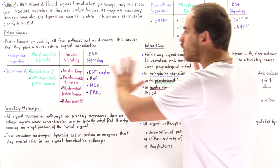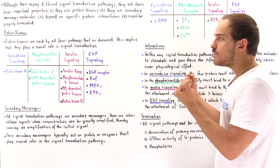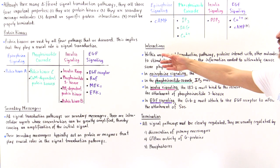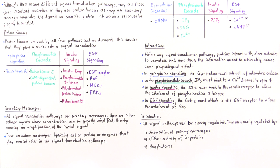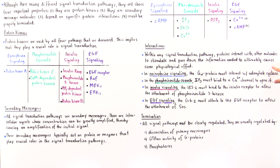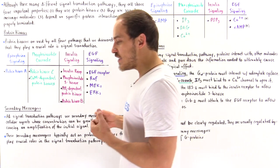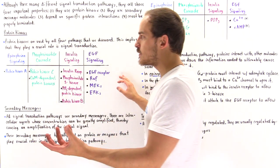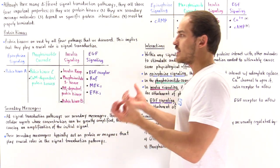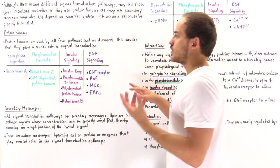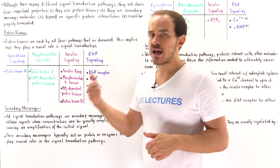Property number three is that all four pathways depend on the correct interaction between protein molecules and other molecules in the pathway. Within any signal transduction pathway, proteins interact with other molecules — these can be proteins, lipids, or secondary messenger molecules such as calcium ions. These interactions stimulate and pass down the information needed to ultimately stimulate the cellular processes that lead to a particular physiological effect: running away, regulating blood pressure, glucose uptake and glycogen synthesis, or repairing damage to epidermal cells.